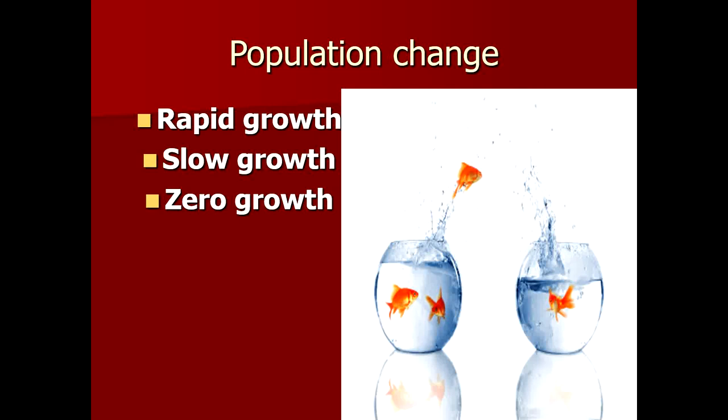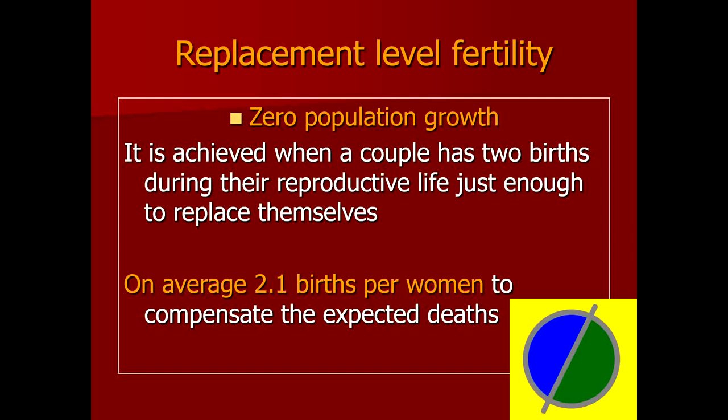Whatever the number of births occurring in a population gets neutralized by the number of deaths, so overall the population is not growing — it shows zero growth. Zero growth is possible only when replacement level fertility is exhibited by that population, meaning a couple gives birth to only two children during their reproductive lifespan.